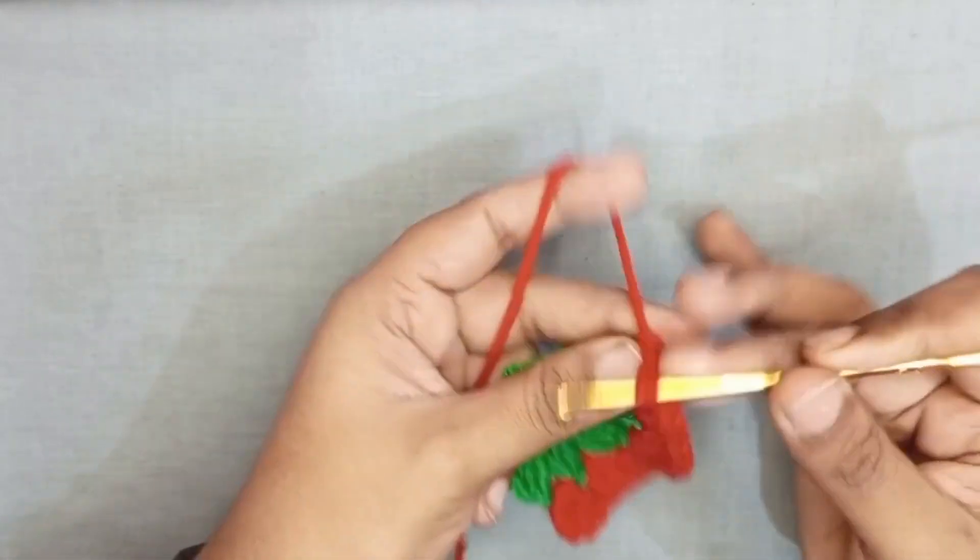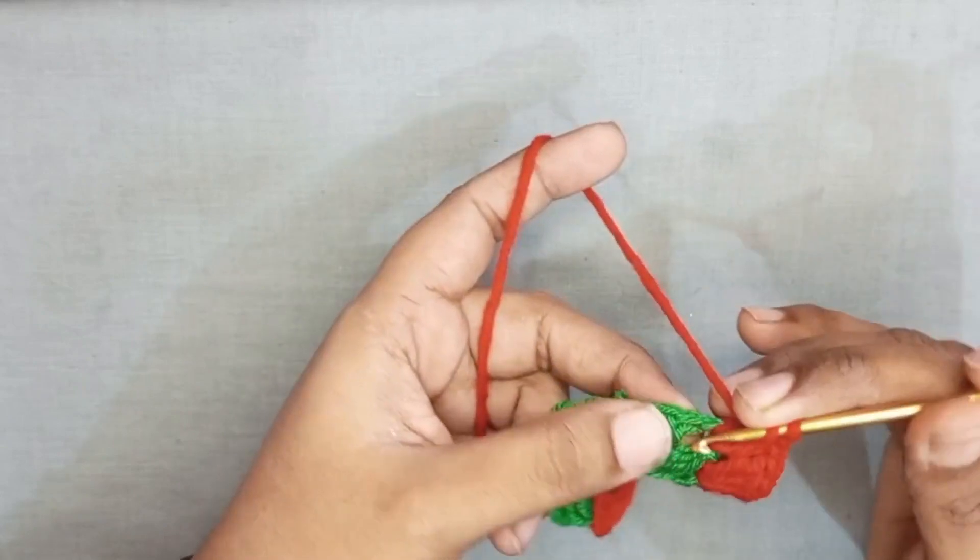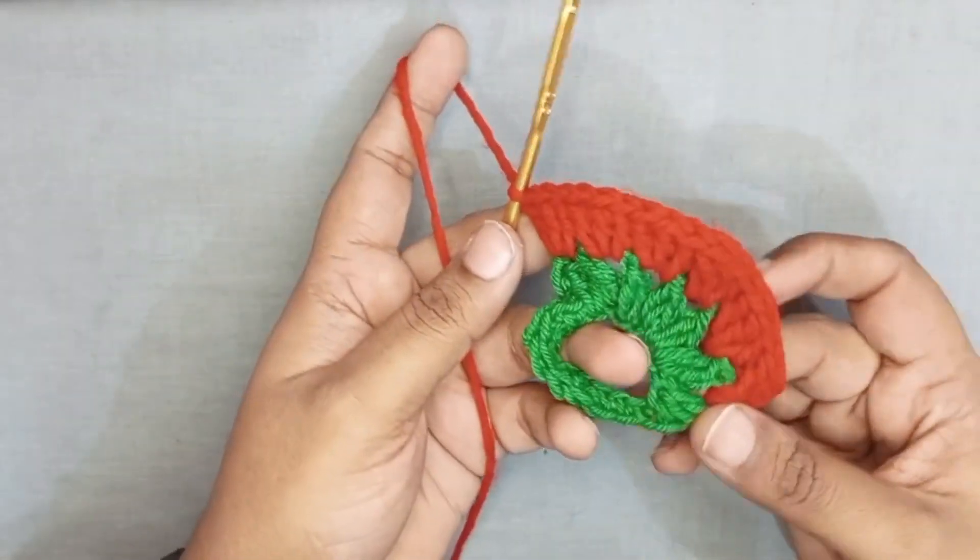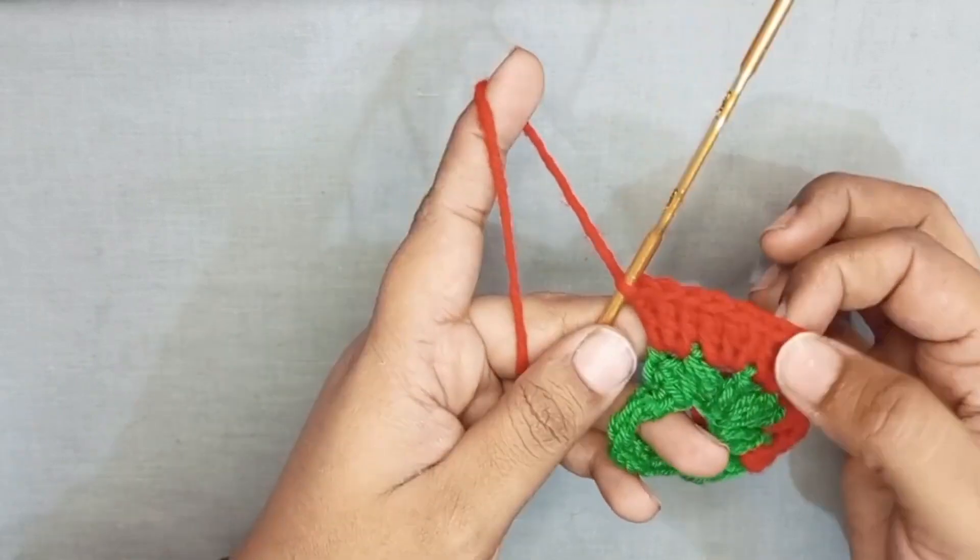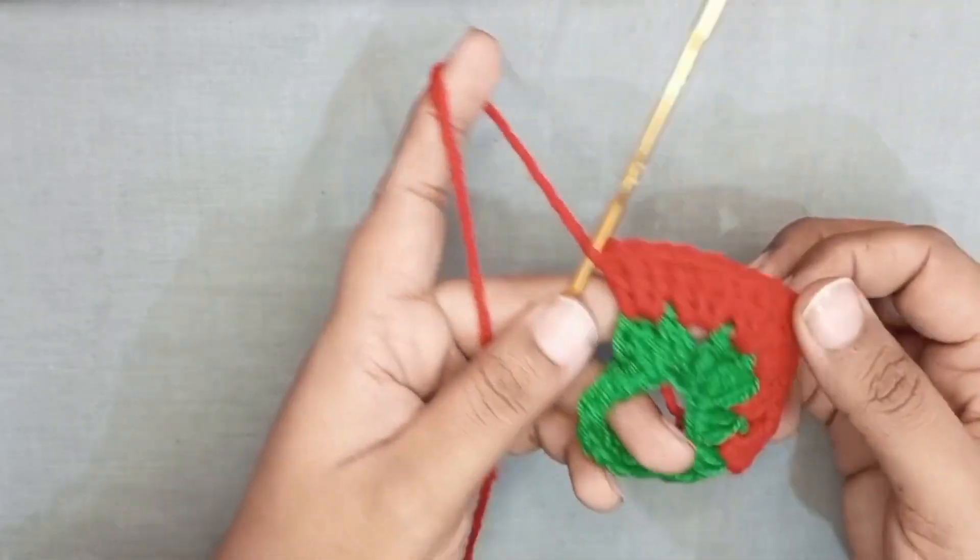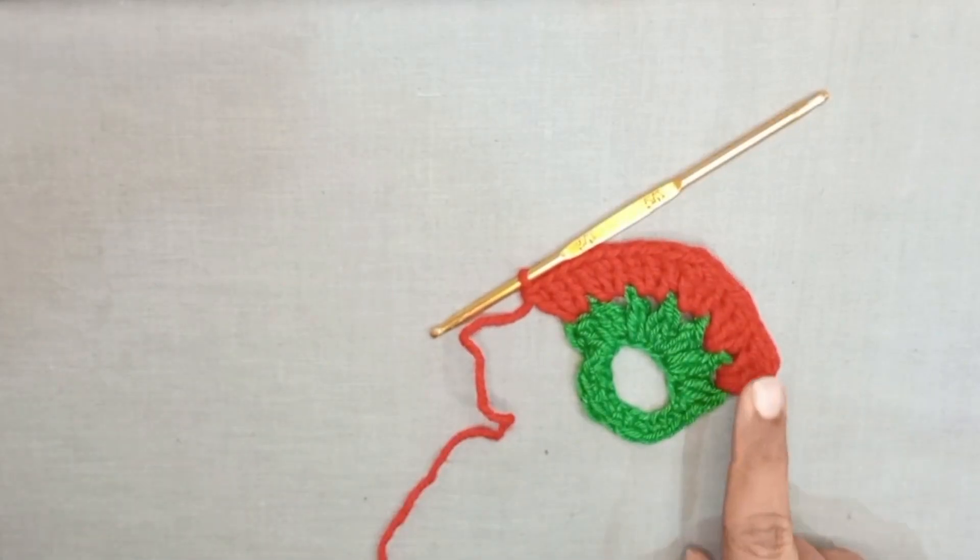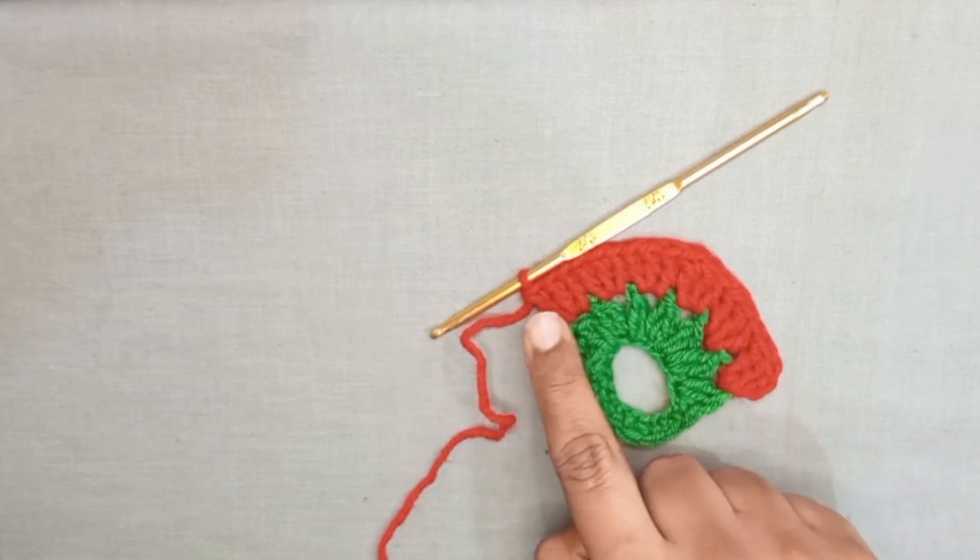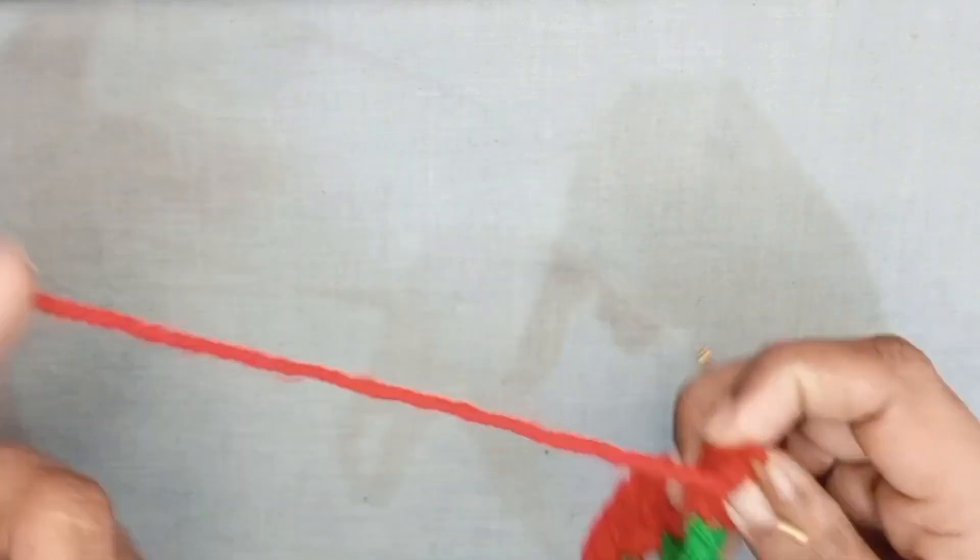Total we make 6 clusters: 1, 2, 3, 4, 5, and 6. Complete my first round we make 6 clusters in second round.